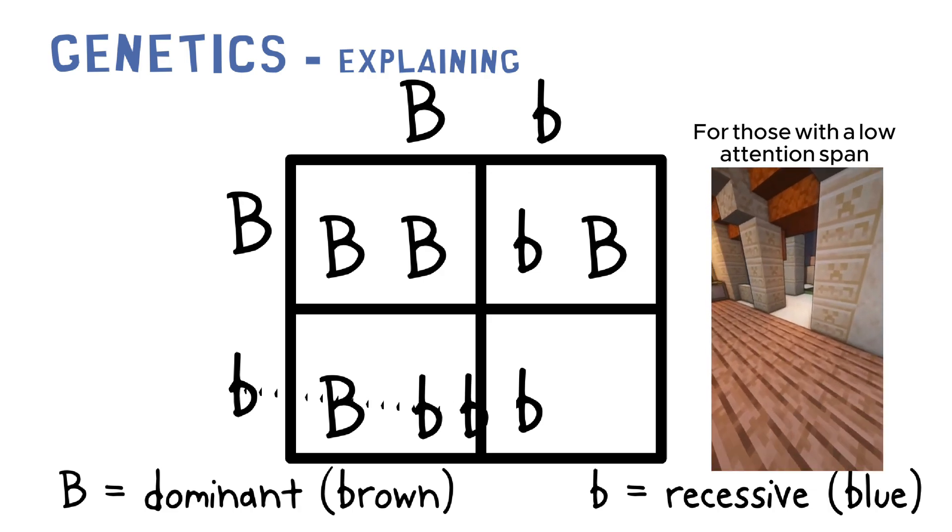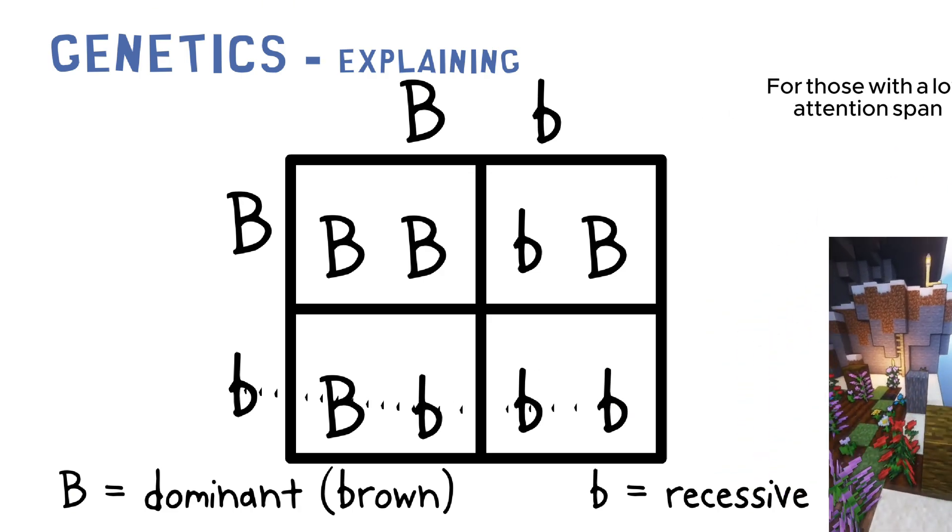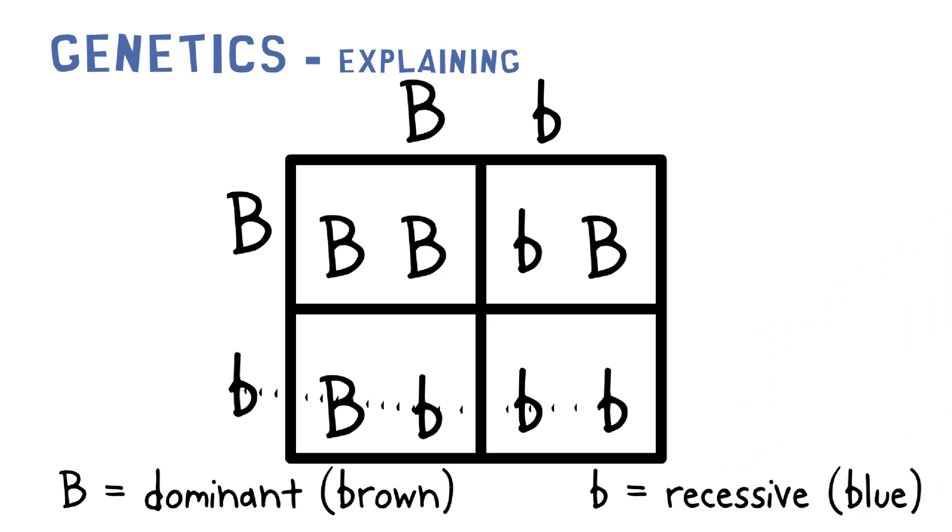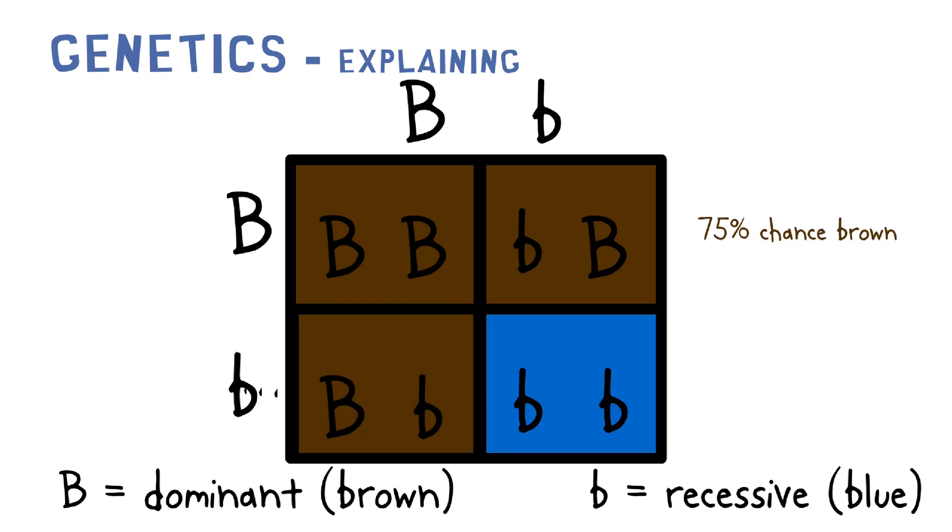And now we can see what eye color this child might have. So after looking at the Punnett square, we can see that the child has a 75% chance of having brown eyes but a 25% chance of having blue eyes.